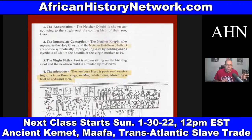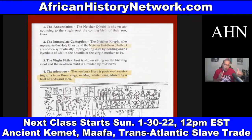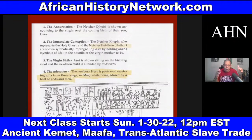Then there's the virgin birth: Aset is shown sitting on the birthing stool and the newborn child is attended by midwives. For the adoration, the newborn Heru is portrayed receiving gifts from the three kings — the three Magi. The Bible doesn't say how many Magi there were, but the 'three kings' is also a reference to the three stars in Orion's Belt, and the star Sirius is in the constellation of Canis Major — also known as the Dog Star. All of this is connected to why Christmas is celebrated on December 25th and the winter solstice.